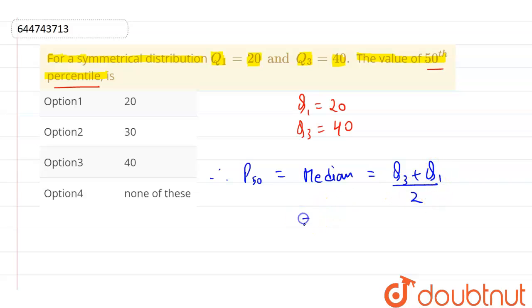Putting the values: Q3 is 40, Q1 is 20. This comes to 60 by 2, so this comes to 30. P50 comes to 30.